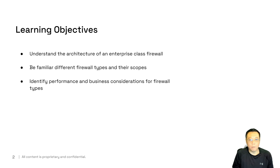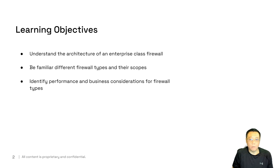We want to be familiar with different firewall types and their scopes — how many legs, where do you put different hosts and assets, and how you are going to protect them using firewall security policies. We also want to identify performance-based considerations for the firewalls: how do you size them, what kind of other scope mechanisms, Layer 4 to Layer 7 capabilities, and how do you implement those firewalls across the network.